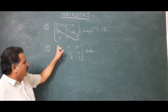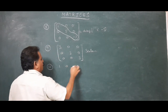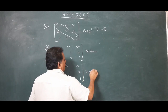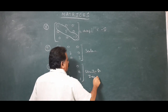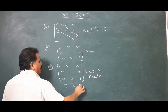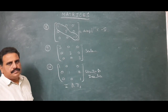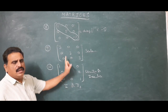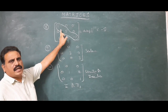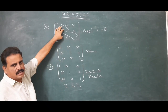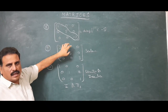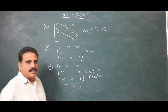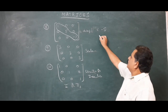If all the elements in the principal diagonal are equal to 1 and all other elements are zero, that is called a unit matrix or identity matrix, denoted by I or I₃. Note: every unit matrix is a scalar matrix, and every scalar matrix is a diagonal matrix, but not vice versa — a diagonal matrix need not be a scalar matrix, and a scalar matrix need not be an identity matrix.